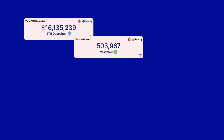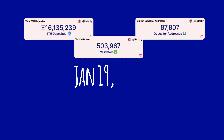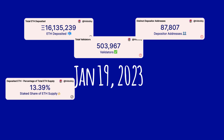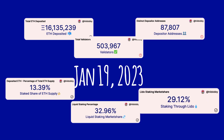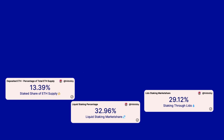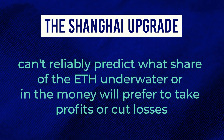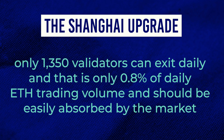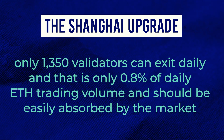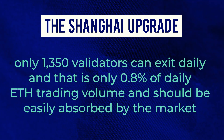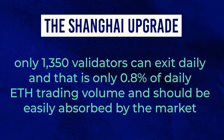Here's some interesting data from the ETH beacon chain DUNE dashboard, as of January 19th, 2023. 13.38% of ETH is staked. The liquid staking market share is 32.96%. 29.12% is staked through Lido. Around 65% of staked ETH is underwater. Some fear the Shanghai upgrade could lead to selling pressure. However, a couple of arguments indicate the contrary. Only 6 validators can exit per epoch — and an epoch is 6.4 minutes for Ethereum — meaning only 1,350 validators can exit daily, amounting to 43,200 ETH a day, which is only 0.8% of daily ETH trading volume and should be easily absorbed by the market.